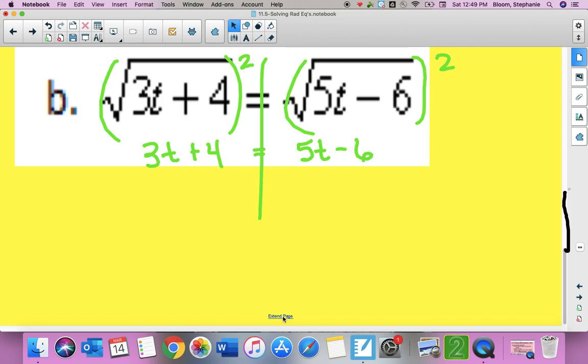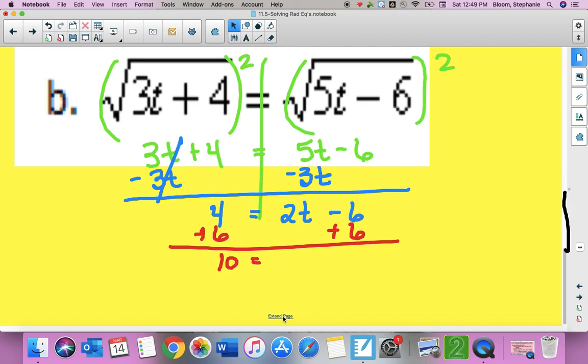And I always move my smallest variable first. So I'm going to take it over by subtracting, putting it underneath the 5t because those are like terms. And I have 4 equals 5t minus 3t is 2t minus 6. And then I'm going to add 6 to both sides. So I have 10 equals 2t. And then I'm going to divide by 2.